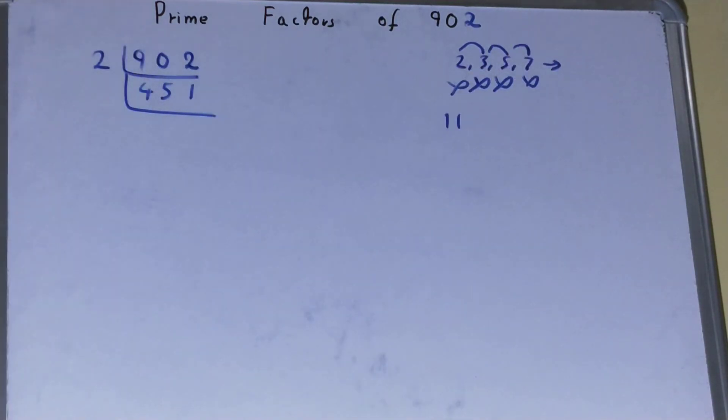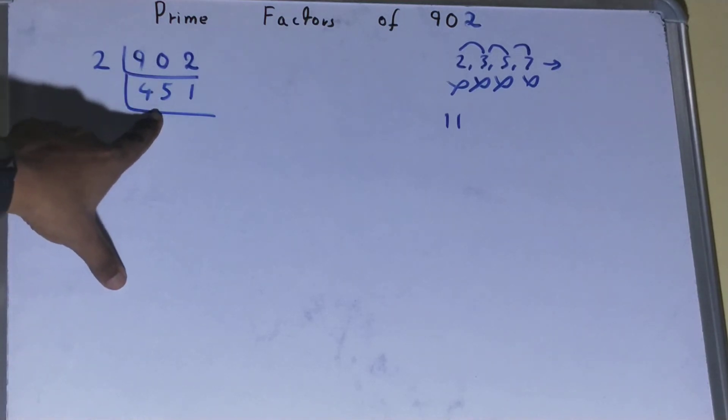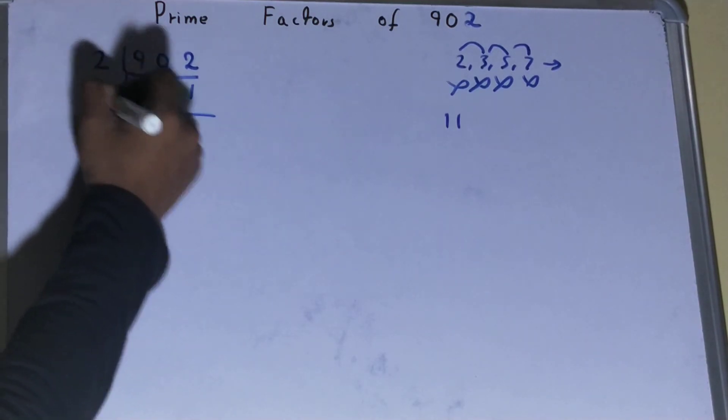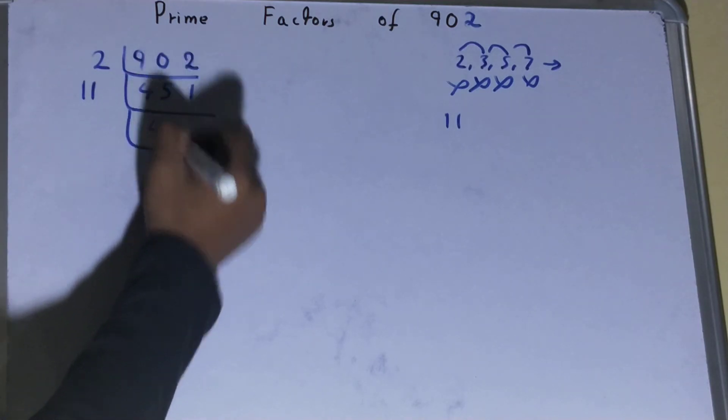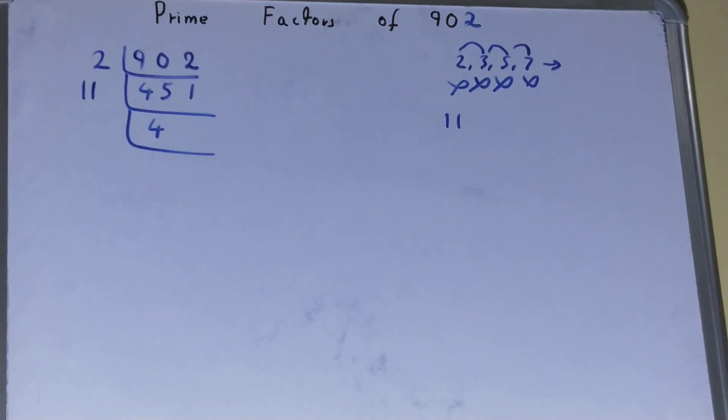Let's check it with 11. 11 times 4 is 44. Yes, it is divisible with 11. So divide it. 11 times 4 is 44. 11 times 1 is 11. So you will be left with 41.